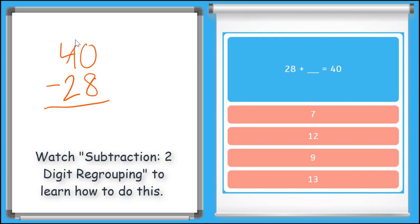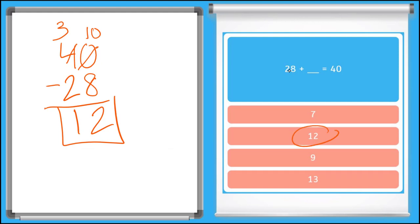Okay, so I'm going to borrow from this 4 in the tens place. I'll take a 10 from the 4, so that makes the 4 a 3. I can add that 10 to the 0, so it makes it 10. Now I can subtract. 10 minus 8 equals 2. Good. And then 3 minus 2 is equal to 1. So, 12 is our final answer. 28 plus 12 is equal to 40.